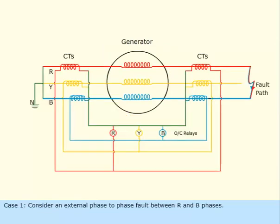Case 1: Consider an external phase-to-phase fault between R and B phases. You can observe the flow path of fault current under the said fault.